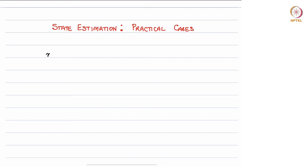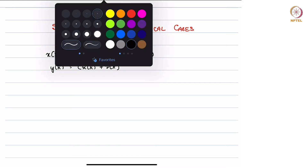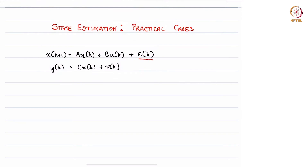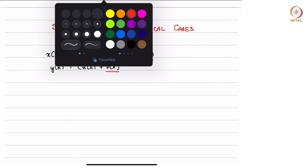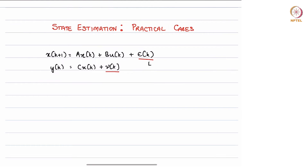We had our system given by x_{k+1} = A x_k + B u_k + ε_k, with ε_k and ν_k being white noise. In a lot of practical cases, ε and ν as written in a naive way like this are not necessarily white.